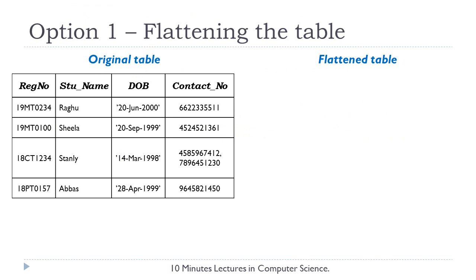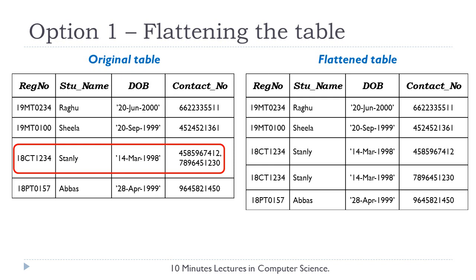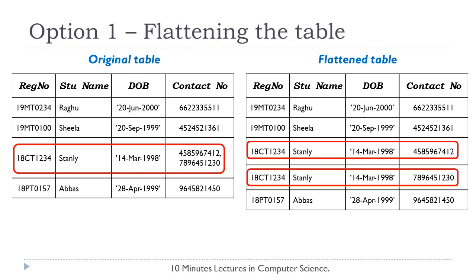Let us discuss about the first approach — flattening the table. In this table, the third record, the record of student Stanley, has two contact numbers. As per the rule of flattening the table, we repeat the register number, student name, and date of birth values for every contact number. We don't need to touch the records where we have only one contact number, but for the third record we repeat the values for each contact number. The problem here is that the primary key gets disturbed and we need to create a new key for this table.